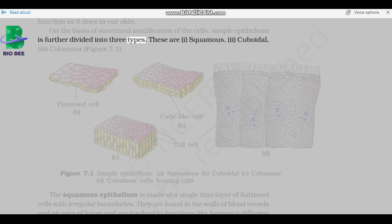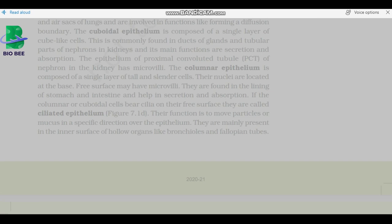On the basis of structural modification of the cells, simple epithelium is further divided into three types. Squamous epithelium is made of a single thin layer of flattened cells with irregular boundaries. They are found in the walls of blood vessels and air sacs of lungs and are involved in functions like forming a diffusion boundary.